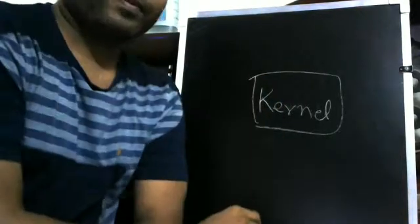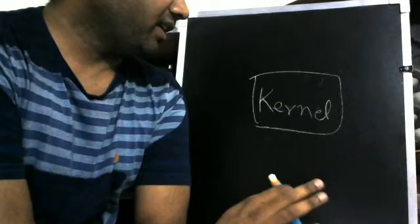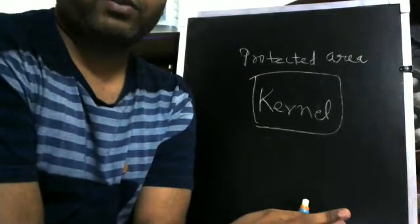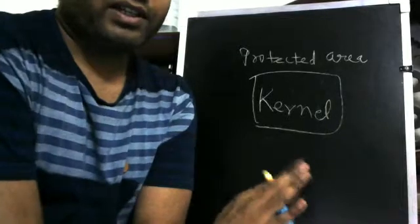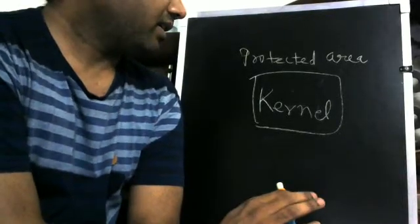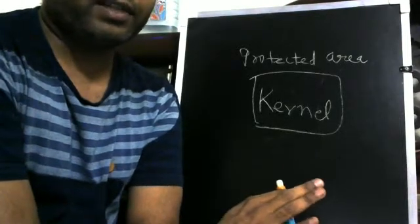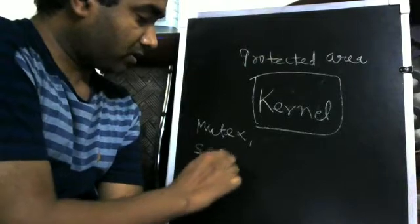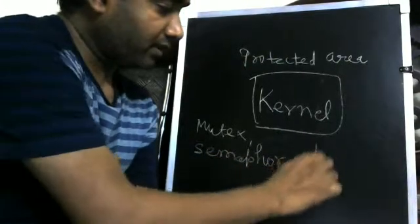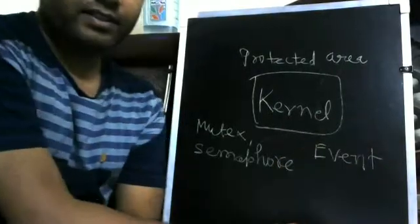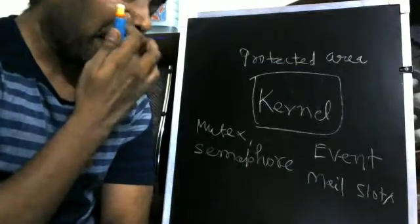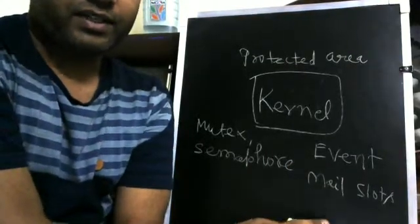The kernel is at the core of the operating system. When the kernel memory is initialized, it is a protected area you cannot touch directly. The operating system provides APIs for that. There are many kernel objects - for example, mutex, semaphore, event object, and mail slots.